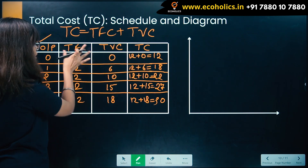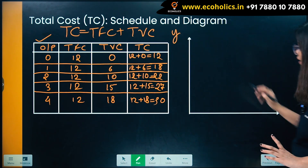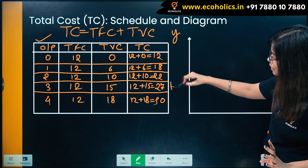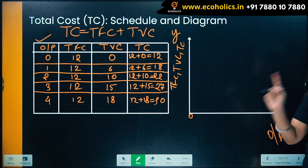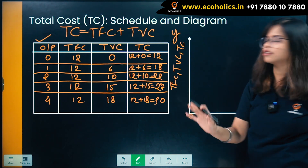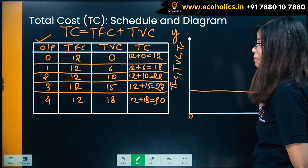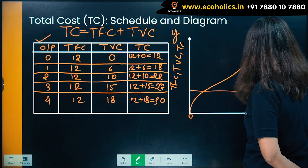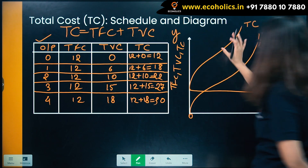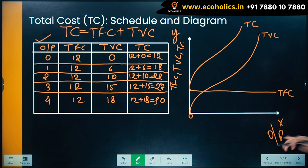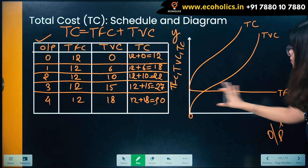Now let's draw the diagram. On the x-axis we have output; on the y-axis we have cost. Total fixed cost is just a straight horizontal line — irrespective of the output, it stays flat. Total variable cost is an inverse-S shape. Total cost is the addition of TFC and TVC.